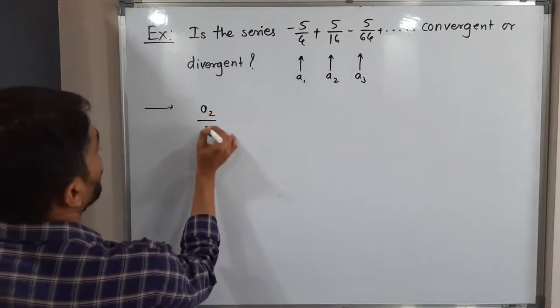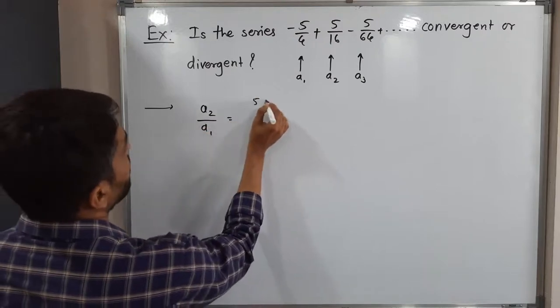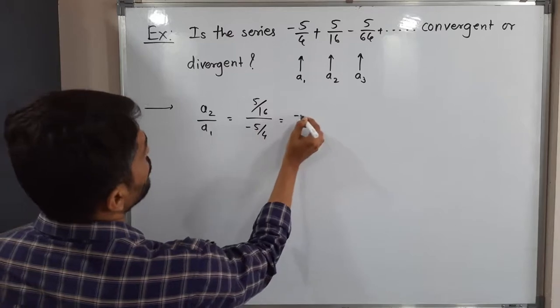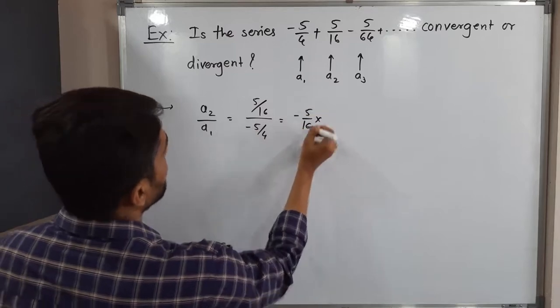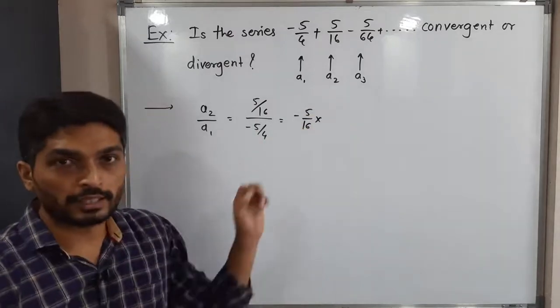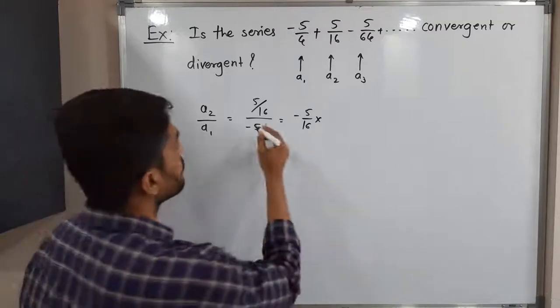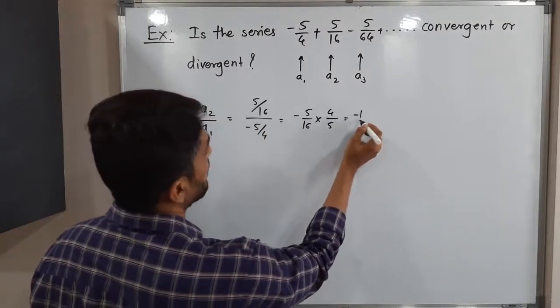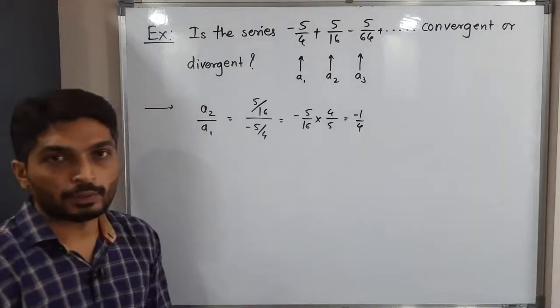Let us find the ratio A2 upon A1. What is A2? 5 by 16. A1 is minus 5 by 4. So minus 5 by 16, it is in denominator. If you wish to take it at numerator, then you should interchange numerator and denominator. So 5, 5 will get cancelled. 4, 4 will get cancelled. It will be minus 1 by 4.